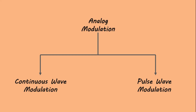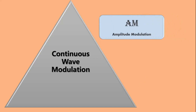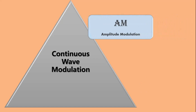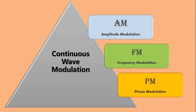Now let us discuss continuous wave modulation first. There are mainly three continuous wave modulation techniques present in communication systems: AM (amplitude modulation), FM (frequency modulation), and PM (phase modulation).